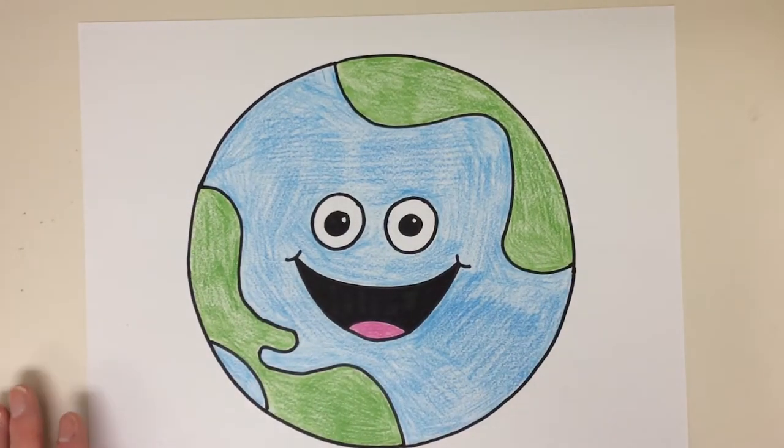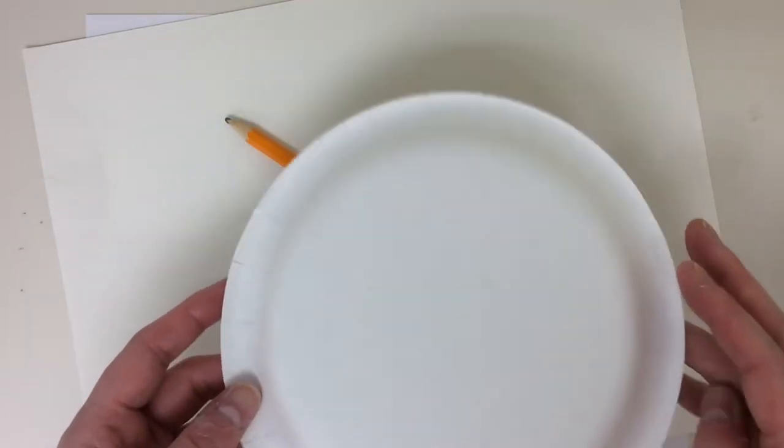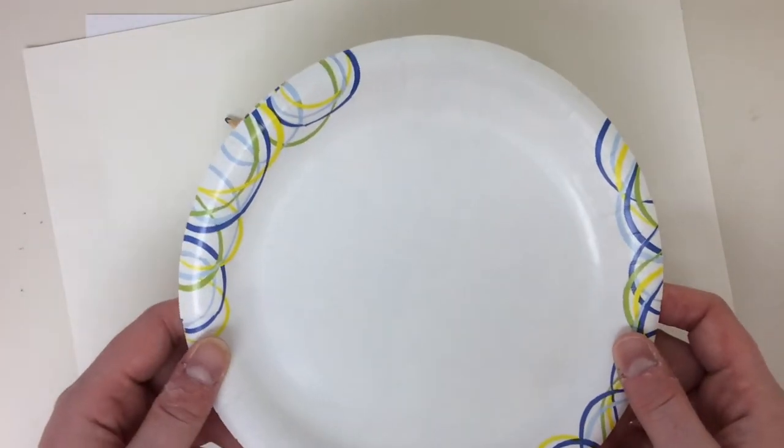So to get started today, all you need are these things: a blank piece of paper, pencil, eraser, and something round that you can trace. I'm using a little paper plate, but a bowl would work nicely too.